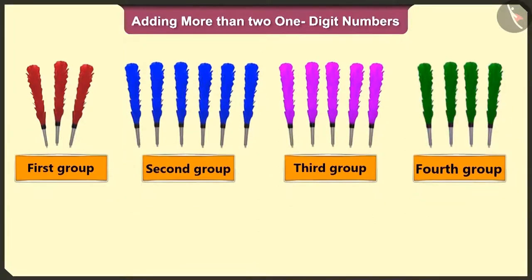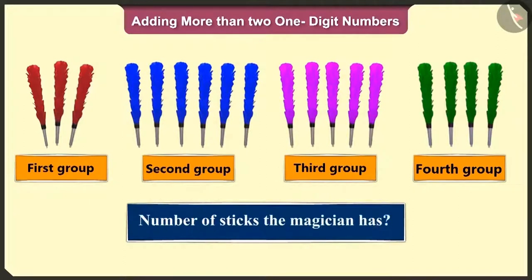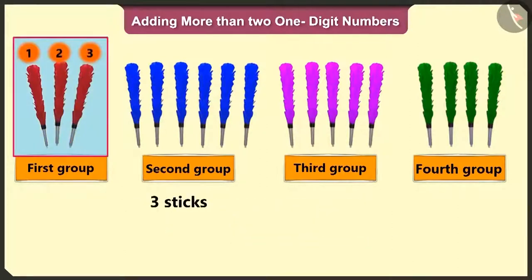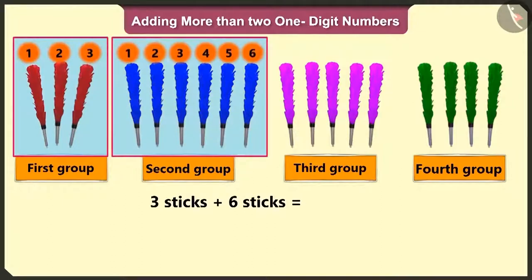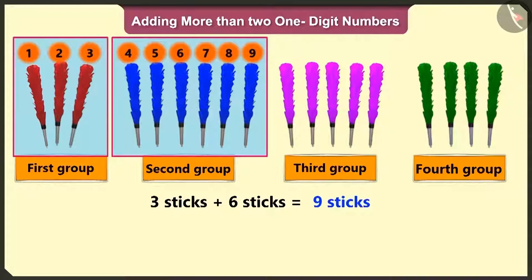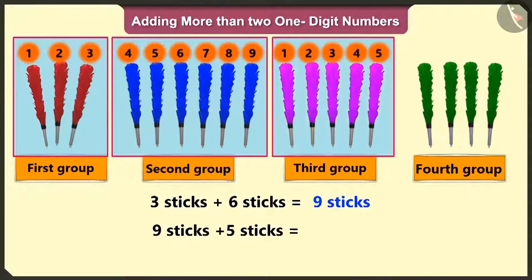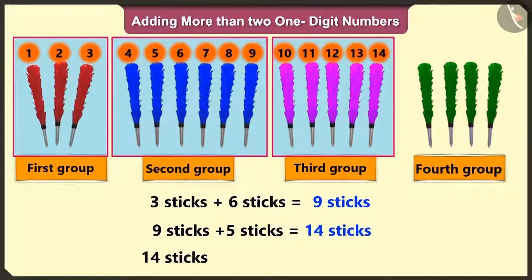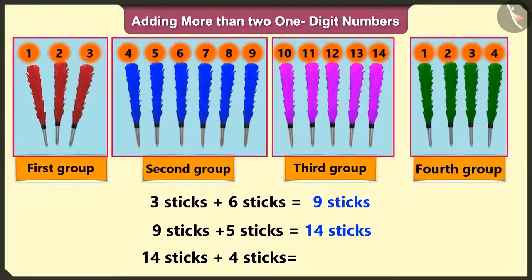So now can you tell me the total number of sticks the magician has? Let us add three and six sticks and count after three: four, five, six, seven, eight and nine sticks. To these nine sticks, add five more sticks. So count after nine: ten, eleven, twelve, thirteen and fourteen sticks. To add fourteen to four more sticks, count after fourteen: fifteen, sixteen, seventeen and eighteen. The magician has a total of eighteen sticks.